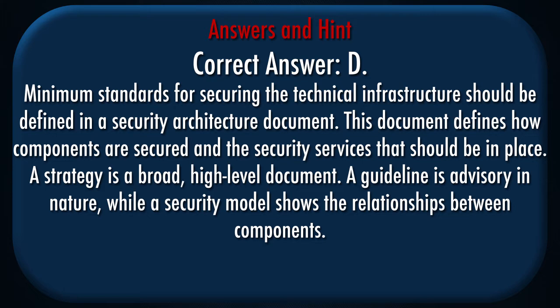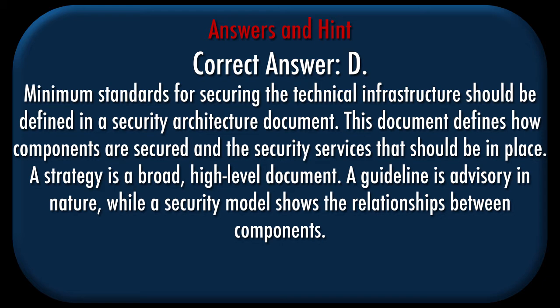Correct answer: D. Explanation: Minimum standards for securing the technical infrastructure should be defined in a security architecture document. This document defines how components are secured and the security services that should be in place. A strategy is a broad, high-level document. A guideline is advisory in nature, while a security model shows the relationships between components.